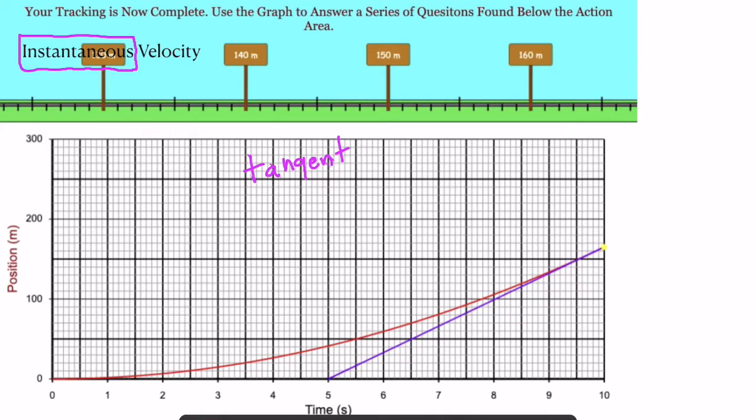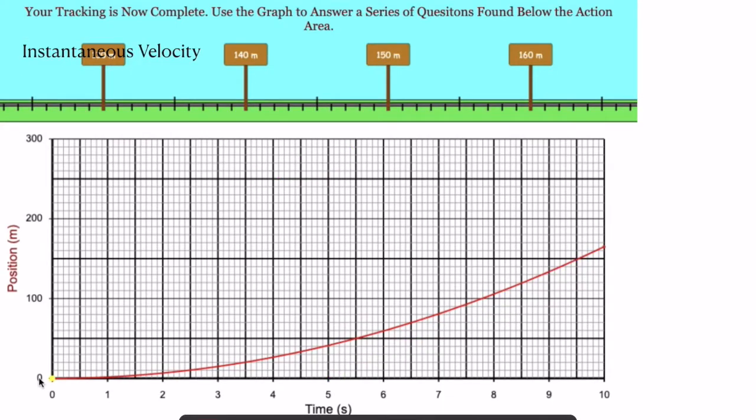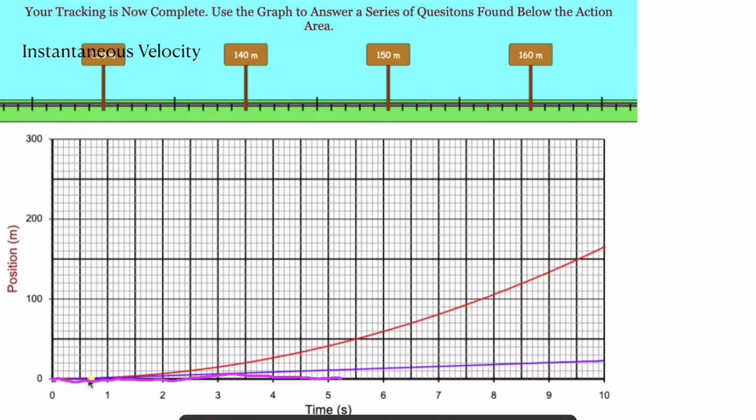And that tangent line would have a different slope at each different moment in time. So if you look again, at the very beginning, the slope is zero. The car's not moving.